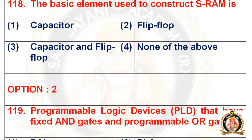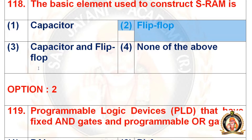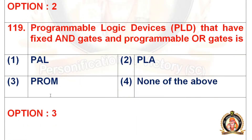Question 118: The basic element used to construct SRAM is. Options are capacitor, flip-flop, capacitor and flip-flop, and none of the above. The right option is the second option, that is flip-flop. Flip-flop is the basic element used to construct SRAM.